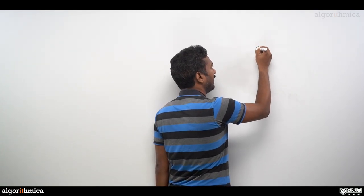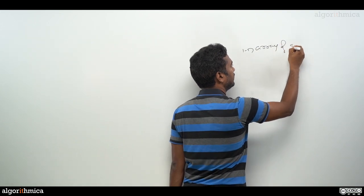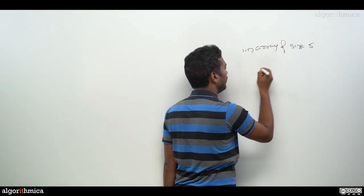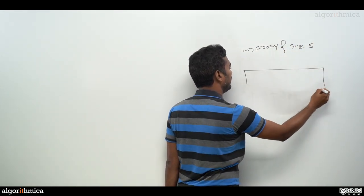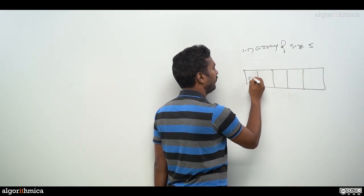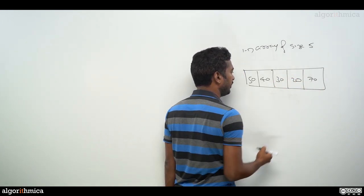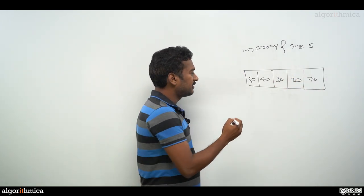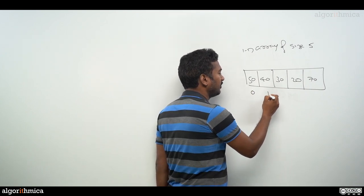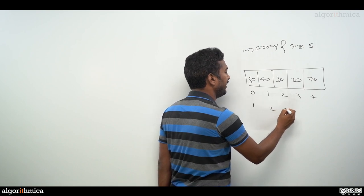Let me give an array, specifically a 1D array of size five. Let me take some random elements in these five slots: 50, 40, 30, 20, and 70. There are two possibilities here. You can start from index zero, this is how we can access, or you can start from index one to access this data.